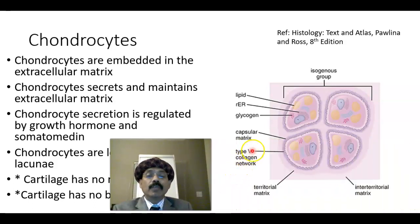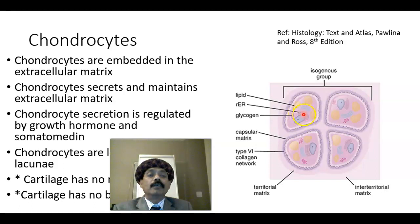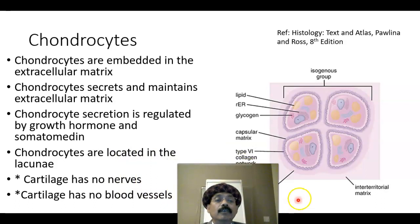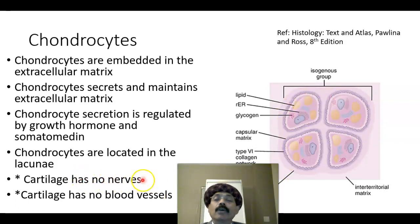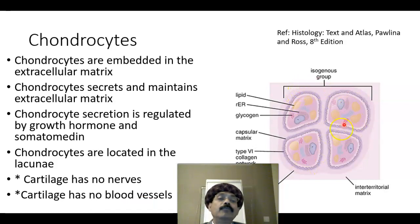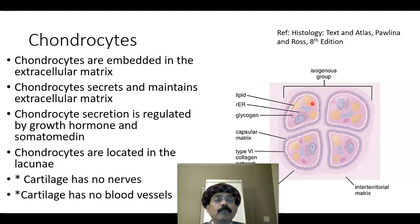The extracellular matrix contains proteins, so we should find rough endoplasmic reticulum inside the chondrocytes. Chondrocytes also contain glycogen and lipid. Chondrocytes are located in the lacuna, which is the cavity for the chondrocytes. Cartilage has no nerves and no blood vessels — it is avascular. It obtains nutrition by diffusion because the perichondrium is vascular, supplying nutrition and oxygen by diffusion.